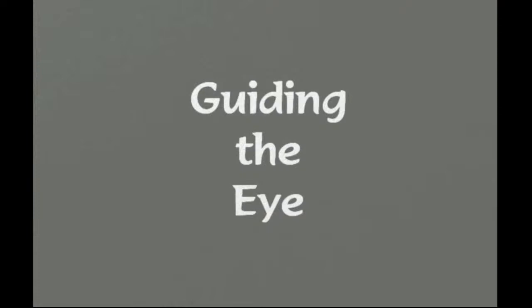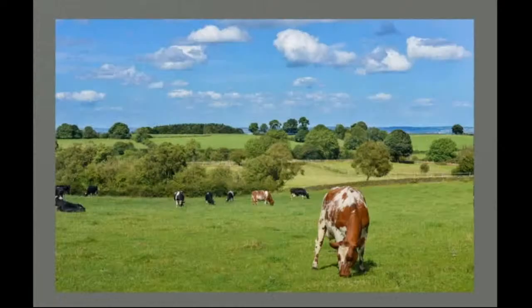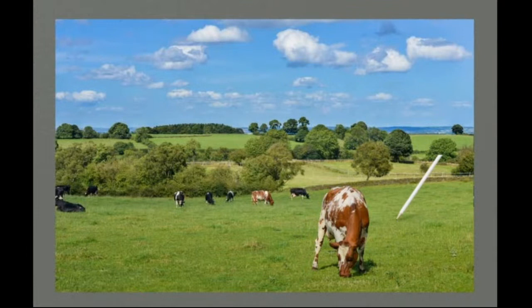Every mark we make on our canvases, every image we place — whatever we do there, in the long run, those things are guiding the viewer's eye. Here we have a simple scene of cows in a pasture, but let's look at just a few things in there that are causing our eyes to scan that particular photo. We have this cow in front who is closer to us than these cows, and no doubt this is what we notice first.